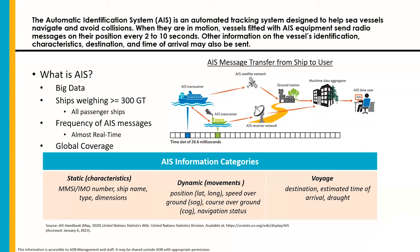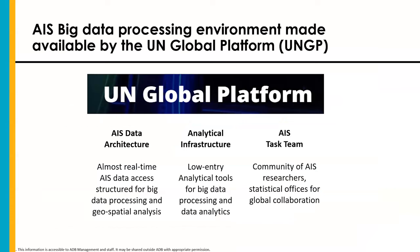AIS messages sent by vessels are categorized as static, dynamic, or voyage-related. Static messages are information on the vessel's identification, including the MMSI and IMO numbers, ship name, and characteristics such as ship type and dimensions. Voyage-related messages include destination, estimated time of arrival, and draft. Dynamic messages include position of the vessel in terms of latitude and longitude, speed over ground, course over ground, and navigational status.